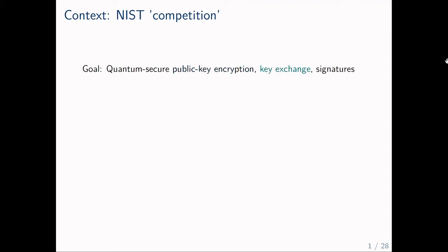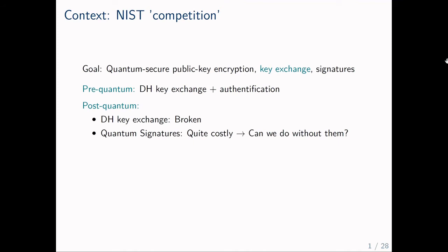Moving on to key exchange. Pre-quantum was fairly straightforward — we could use Diffie-Hellman key exchange and authentication via signatures or MACs. Post-quantum the situation is different. Diffie-Hellman is broken and known constructions for quantum signatures are still quite costly, so we would like to do without them during protocol execution. Any public key primitive requires a working public key infrastructure, and that requires signatures to certify the public key. But the certificate only has to be verified once, so using signatures to set up the infrastructure only adds negligible overhead.